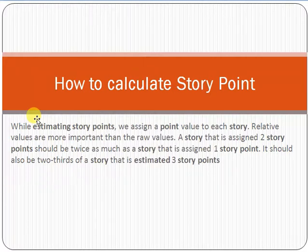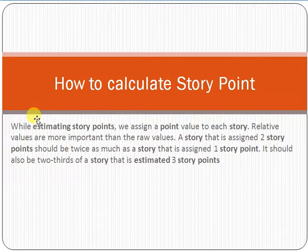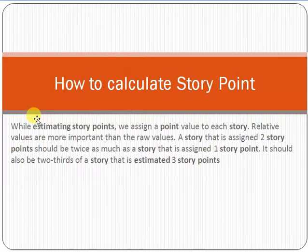If there is another story that is more complex, we assign it point three. But remember, if you assign point three, it should be more complex relative to the other user stories. Whatever points you assign to the stories should depend on the complexity level, and the decision should be made on the relativity between user stories in the sprint. One means less complex, two means more complex than the previous story, three means even more complex — this is the main approach to calculate story points.